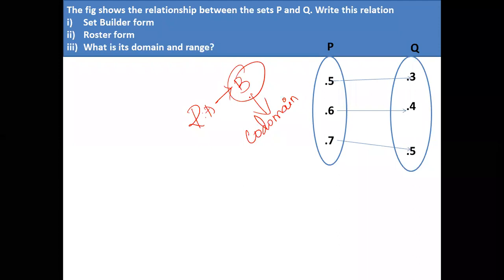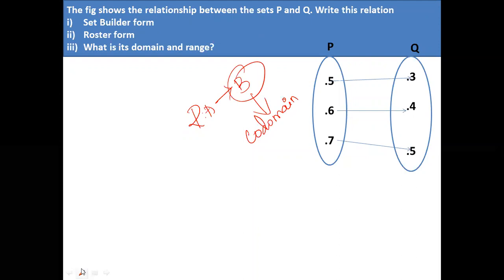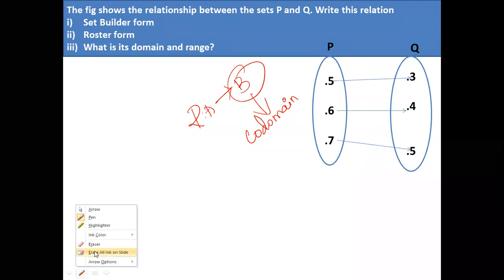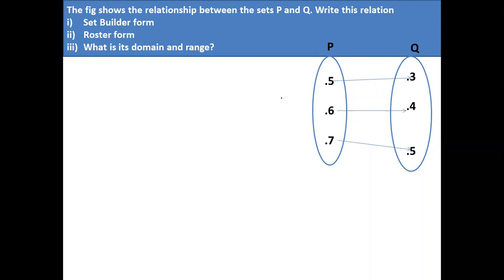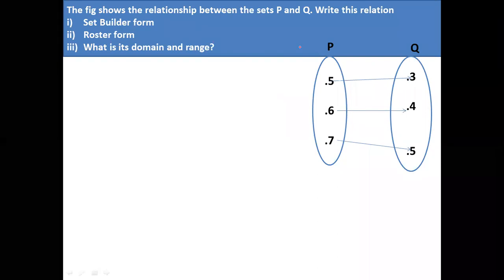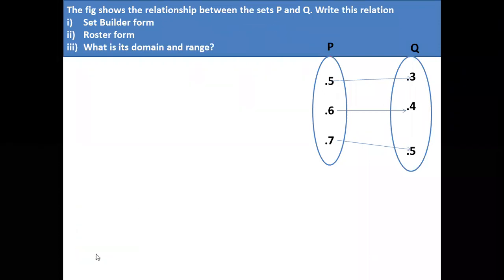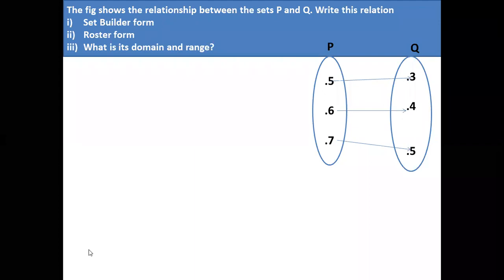You know all these things and yesterday we were discussing some problems. I had given this as homework. Did you get the answer? Okay, so we will discuss the answer. The first question asks you to write the relationship between P and Q in set builder form.